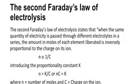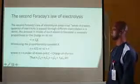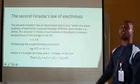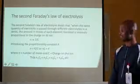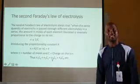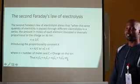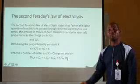The second law of electrolysis states that when the same quantity of electricity is passed through two different electrolytes in series, the amount in moles of each element liberated or deposited is inversely proportional to the charge on the ion. Mathematically, n is proportional to 1/c, where c is the charge. This gives the relation: n₁c₁ = n₂c₂ = n₃c₃ = n₄c₄ = nₙcₙ, where n represents the number of moles.